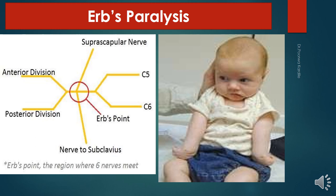Muscles paralyzed include biceps brachii, deltoid, brachialis, brachioradialis, and supraspinatus. Infraspinatus and supinator are partly affected. The resulting deformity is the arm hanging by the side, adducted and medially rotated.